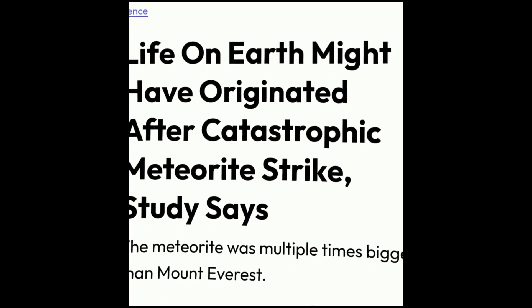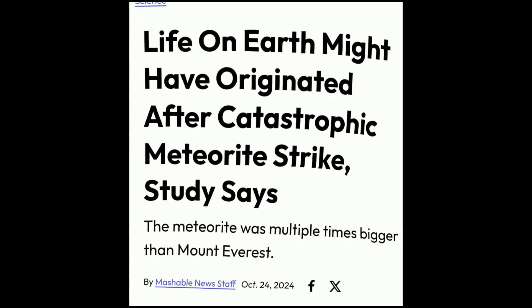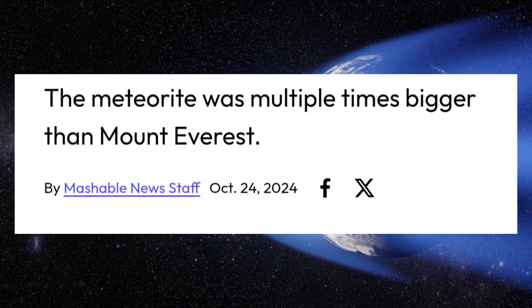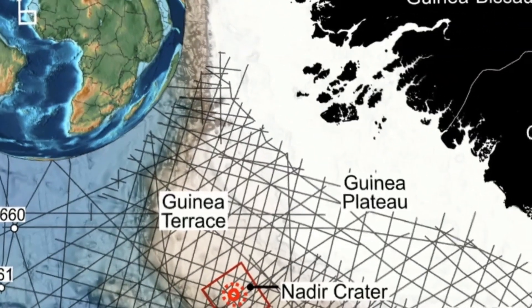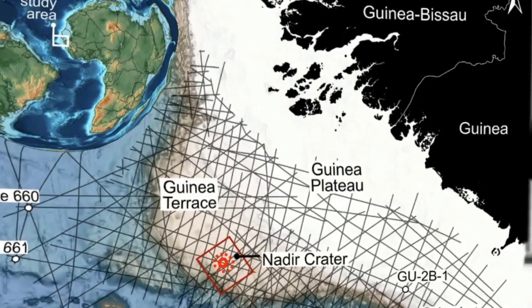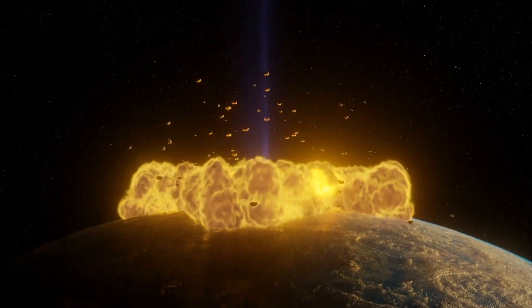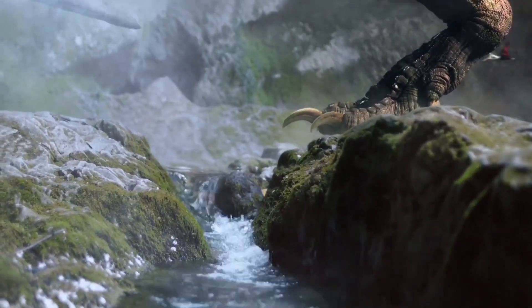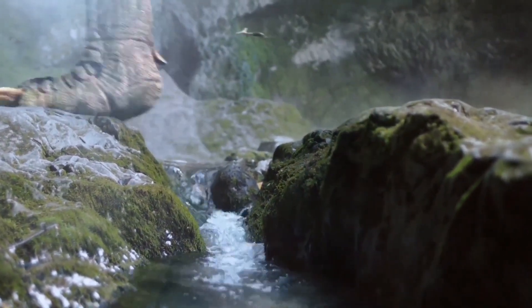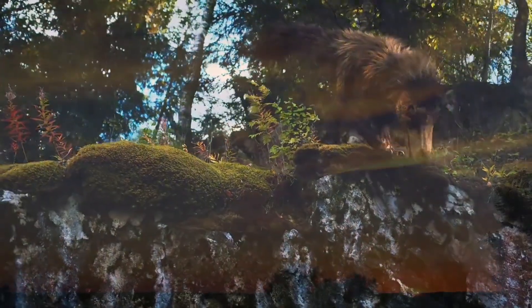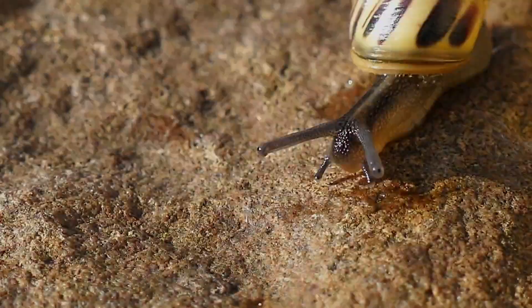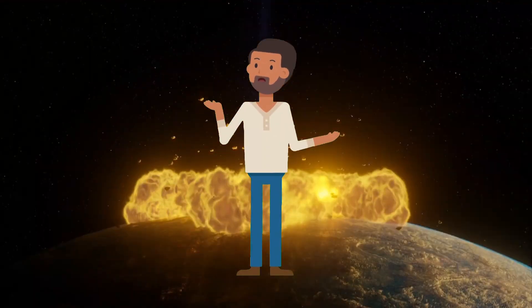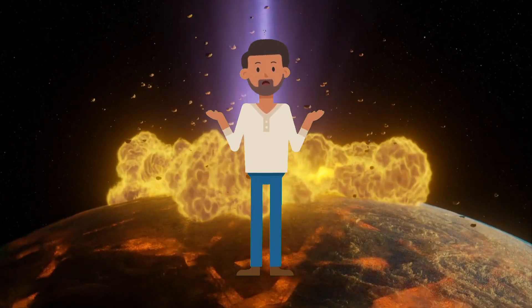A recent study reveals that billions of years ago, a colossal asteroid far larger than the Chicxulub asteroid collided with Earth. Surprisingly, this catastrophic impact didn't spell doom. Instead, it set the stage for life to emerge. But how is that even possible? How could a single meteorite shape the trajectory of evolution? And what would our planet look like today if this event had never occurred? Let's break it down.